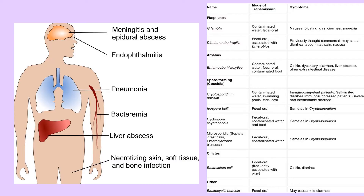Pneumocystis carinii causes pneumonia in AIDS and immunosuppressed patients. Helminths causing human infection include Taenia solium (pork tapeworm) and Taenia saginata (beef tapeworm); the larva is called cysticercus. Taenia solium can be deadly if larvae collect in the brain — neurocysticercosis. Treatment is praziquantel and albendazole. Enterobius vermicularis is the most common worm infection in the United States, causing perianal itching. Trichinella spiralis causes muscle pain, periorbital edema, and fever; larvae enter striated muscle via ingestion of undercooked pork or wild game.